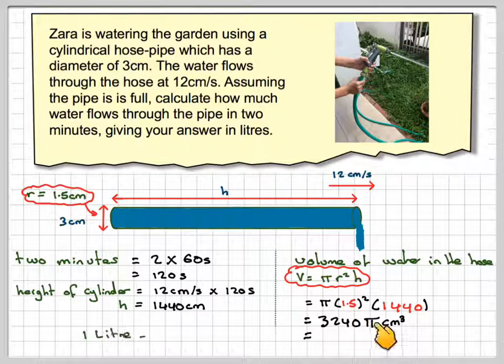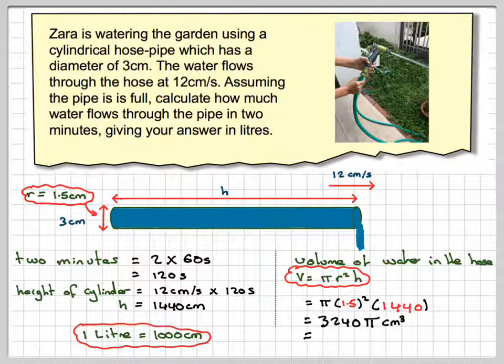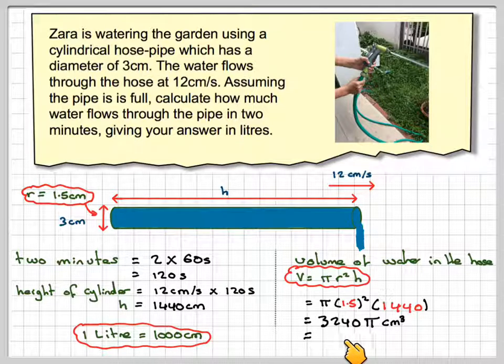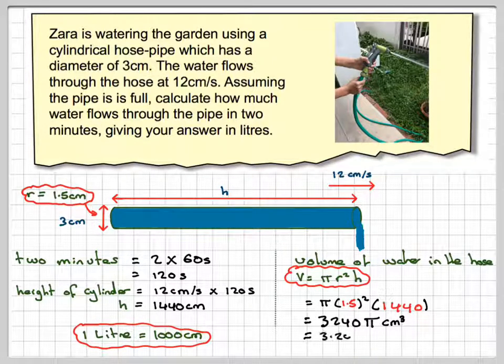And, if we do 1.5 squared times 1440, we're going to get 3,240 pi centimeters cubed. Now, 1 liter is equal to 1,000 centimeters cubed. So, if we divide that by 1,000, we're going to get 3.24 pi liters.